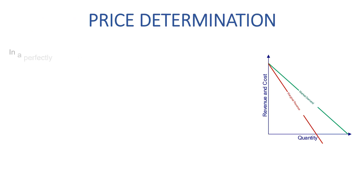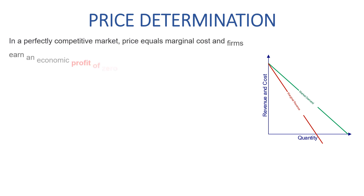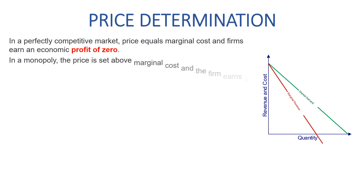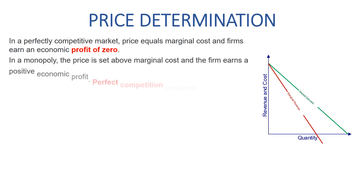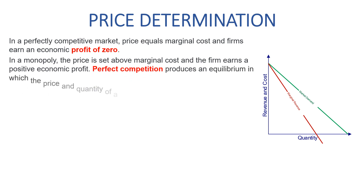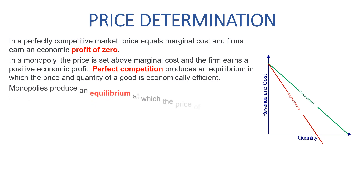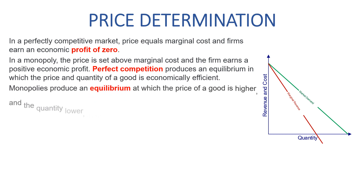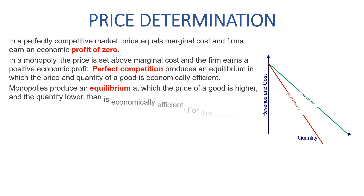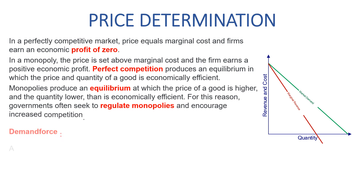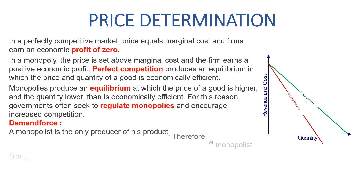Price Determination. In a perfectly competitive market, price equals marginal cost and firms earn an economic profit of zero. In a monopoly, prices are set above marginal cost and the firm earns a positive economic profit. Perfect competition produces an equilibrium in which the price and quantity of a good is economically efficient. Monopoly produces an equilibrium at which the price of a good is higher and the quantity lower than is economically efficient. For this reason, government often seeks to regulate monopolies and encourage increased competition.